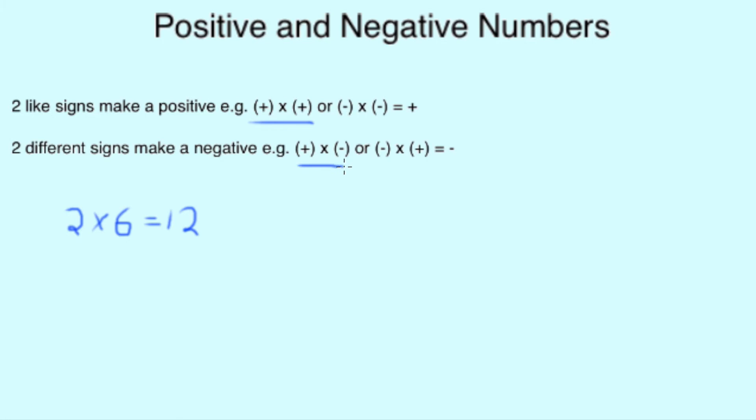Now, we'll do the same thing but change one of them to a negative. We'll keep positive 2 times by a negative 6 this time. Because we know there's a different rule for this, it's going to equal a negative. We'll get the same answer, 12, but it's a negative this time. Minus 12.